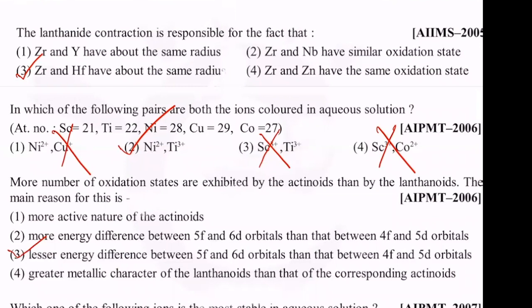If you look at the electronic configuration, you can see how the energy gap between orbitals works. The energy level difference is smaller, so more oxidation states are possible. We can examine the oxidation states possible.